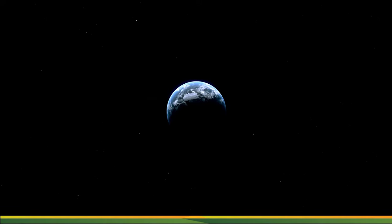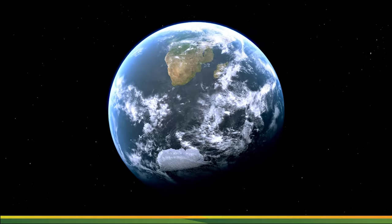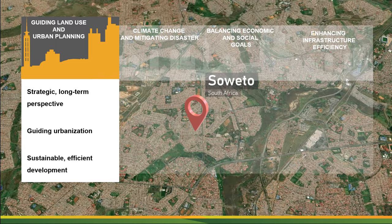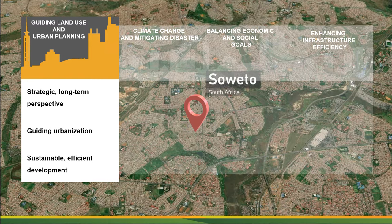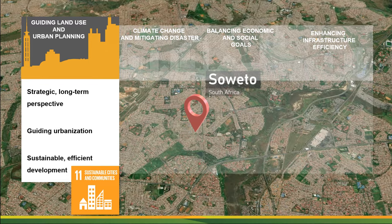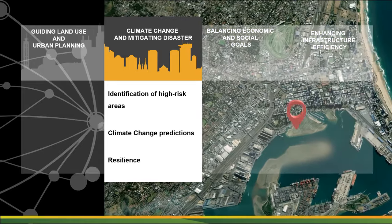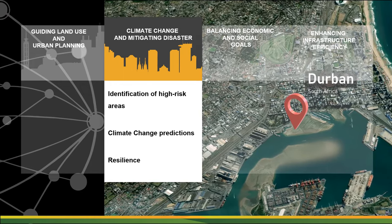There will be 75 million South Africans in 2050, mostly living in major urban centers. The National Spatial Development Framework (NSDF) plays a critical role in enhancing urban resilience through several mechanisms. Guiding land use and urban planning, the NSDF provides a strategic, long-term perspective on optimal land use and development. By guiding urbanization patterns, it ensures sustainable, efficient development, minimizing environmental impacts. This directly contributes to SDG 11, sustainable cities and communities. Mitigating disaster risk, by identifying high-risk areas for natural disasters such as floods or landslides, the NSDF helps guide development away from these zones, thereby enhancing urban resilience.